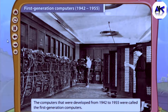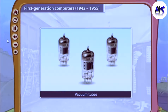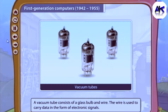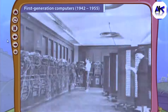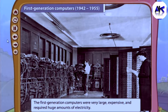The computers developed from 1942 to 1955 were called the first generation computers. They used vacuum tubes. A vacuum tube consists of a glass bulb and wire; the wire is used to carry data in the form of electronic signals. The first generation computers were very large, expensive, and required a huge amount of electricity.